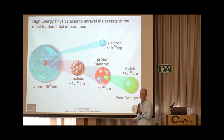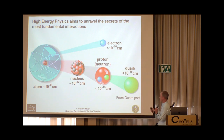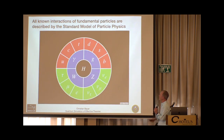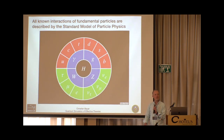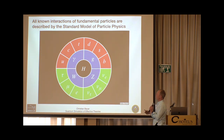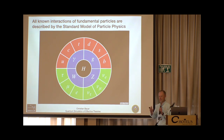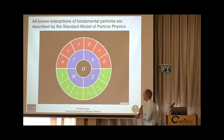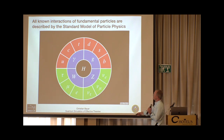Protons and neutrons again have internal structure — they are made out of quarks and gluons. These quarks and gluons are thought to be elementary. The standard model of particle physics, which we heard a little bit about earlier today, is the theory that describes how these most fundamental particles interact with one another.